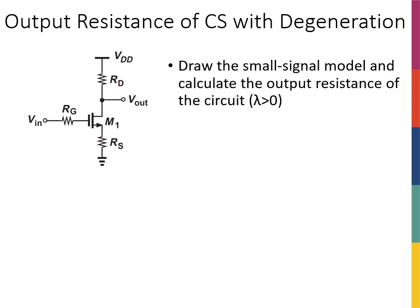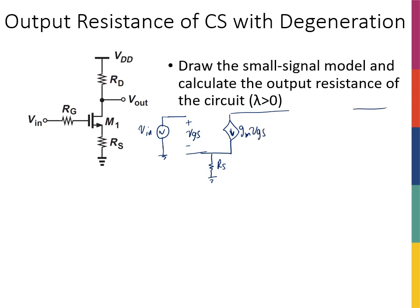The first thing we need to do is draw the small signal model. So VN comes to the gate, VGS, the source is connected to ground through an RS, and there is a drain with GM·VGS. Since lambda is greater than zero, let's keep R0 so our solution is as generic as possible, and then I have an RD.